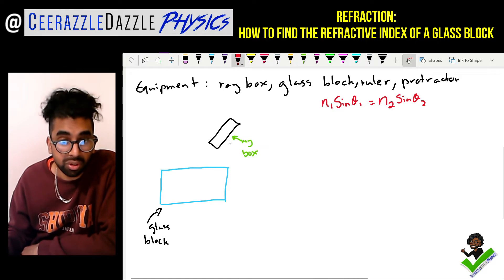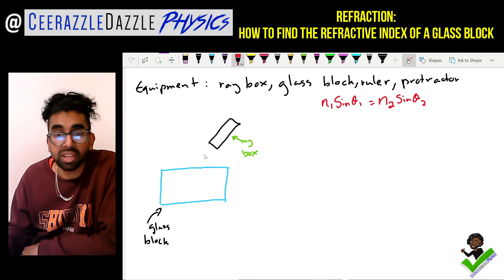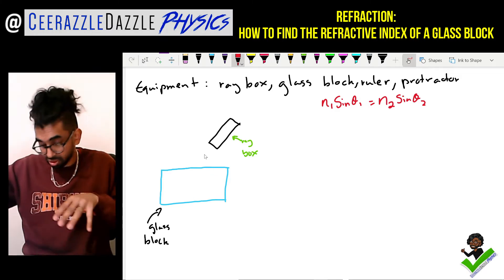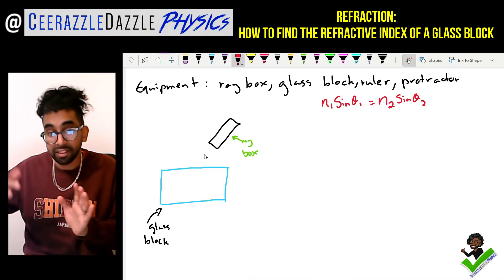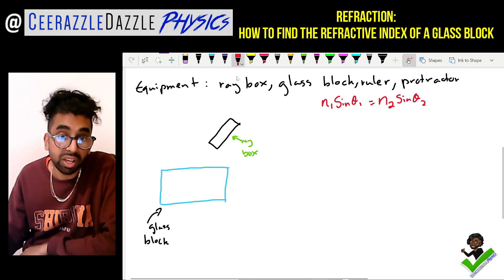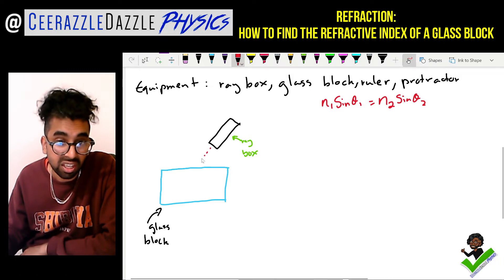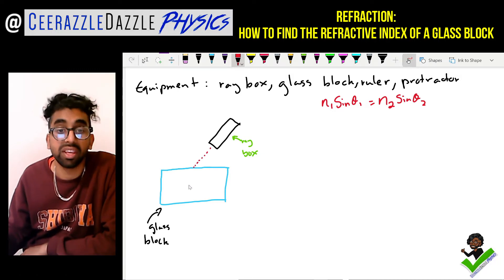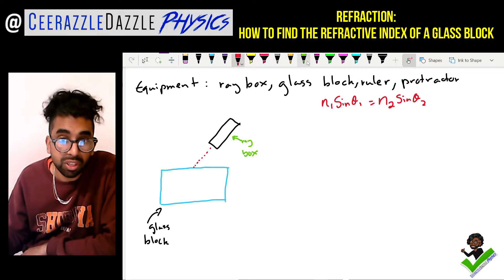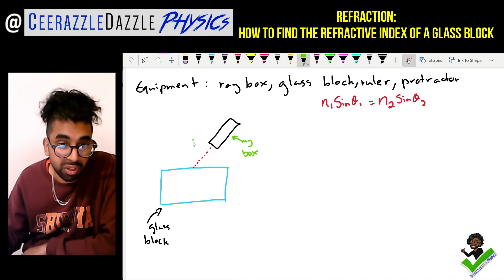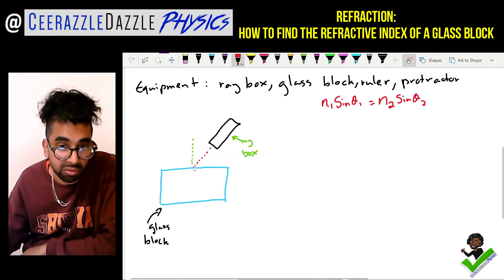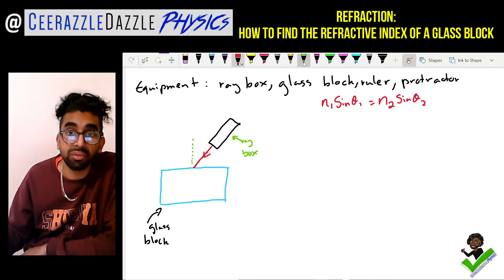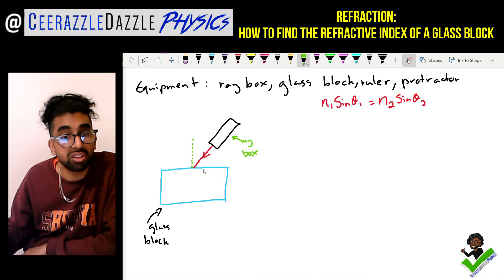We've got the apparatus set out. You get a piece of paper, put your ray box on it, and have the glass block on the paper. You shine a ray of light from the ray box and it hits the glass block. The first thing you should draw is a normal, which is perpendicular to the glass block.